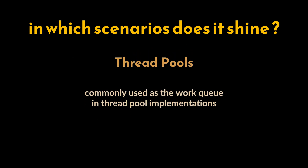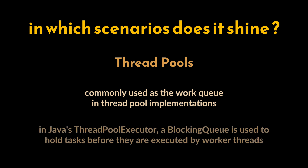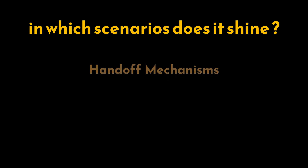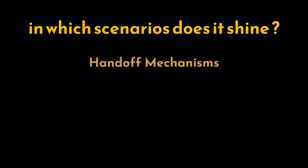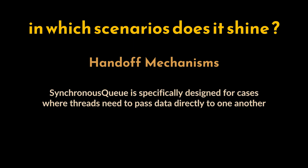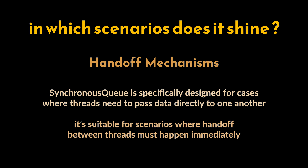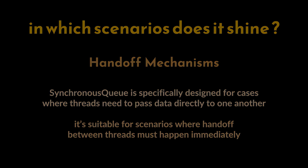Additionally, the BlockingQueue is commonly used as the work queue in thread pool implementations. In Java's ThreadPoolExecutor, a BlockingQueue is used to hold tasks before they are executed by worker threads. Last but not least, the BlockingQueue is commonly used with handoff mechanisms — the SynchronousQueue is specifically designed for cases where threads need to pass data directly to one another without holding it in a queue, suitable for scenarios where handoff must happen immediately.